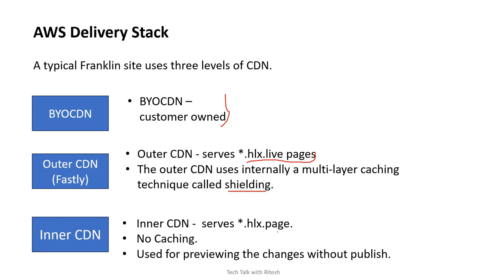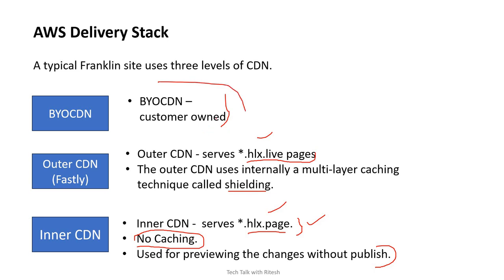The inner CDN serves the preview pages. We can generate a preview URL — it's just for when I have configured my document and want to see how it will look on the end website. Similar to AEM's normal preview option, here also we can first preview the page, confirm it looks good, then publish it. Importantly, there is no caching in the inner CDN — it's just for authors to preview changes before making them live.